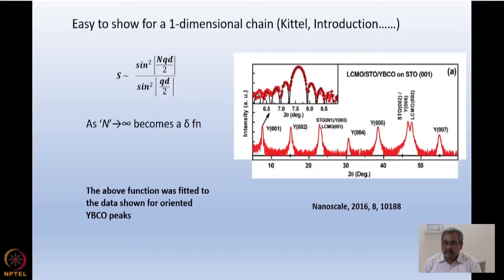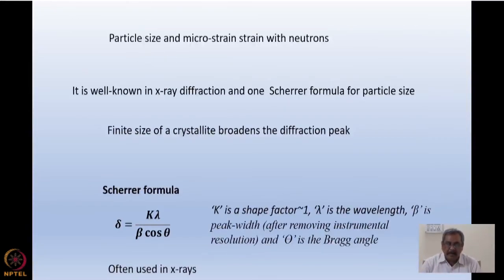I have shown you here that using this formula we could obtain the peak shapes for a highly oriented YBCO crystal. From there we could actually fit the n value that gave, in this case it was a thin film. For a one-dimensional chain it is easy to evaluate, but even for a three-dimensional chain, the phenomenological formula K λ / (β cos θ) is used often to find out the particle size broadening.